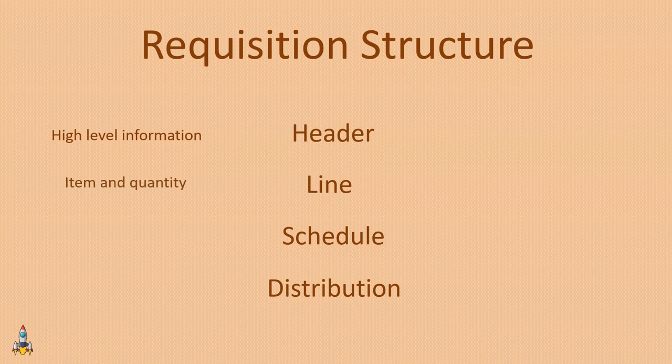Next we have the line section, which gives you information about the items or services you are ordering and the quantity of each item. For example, if a given requisition has 10 different items, the line section will have details about those items — their unit of measure, currency, quantity, and so on.